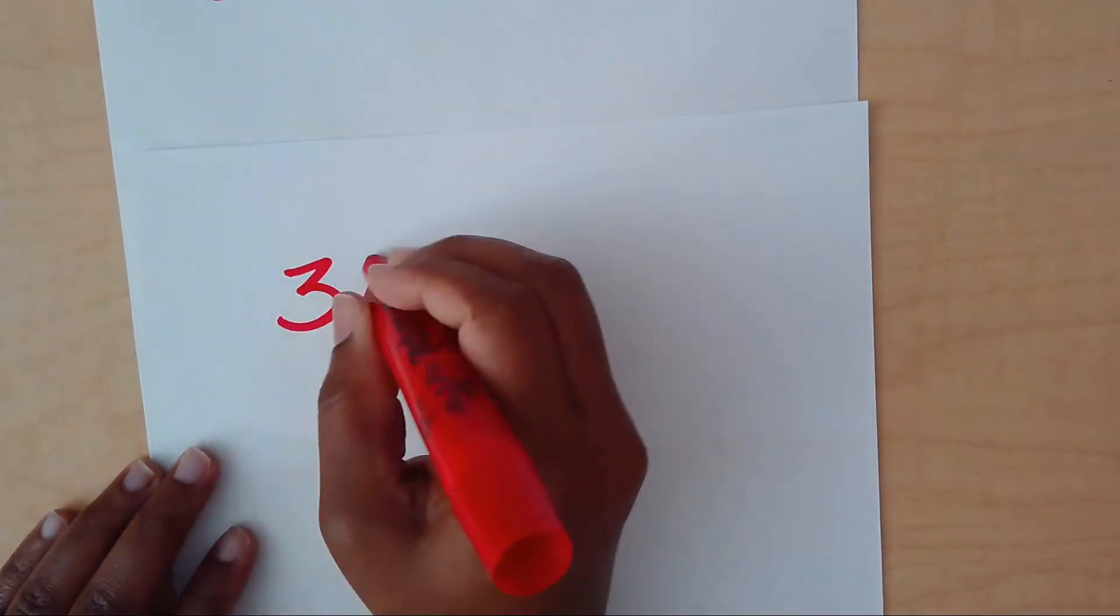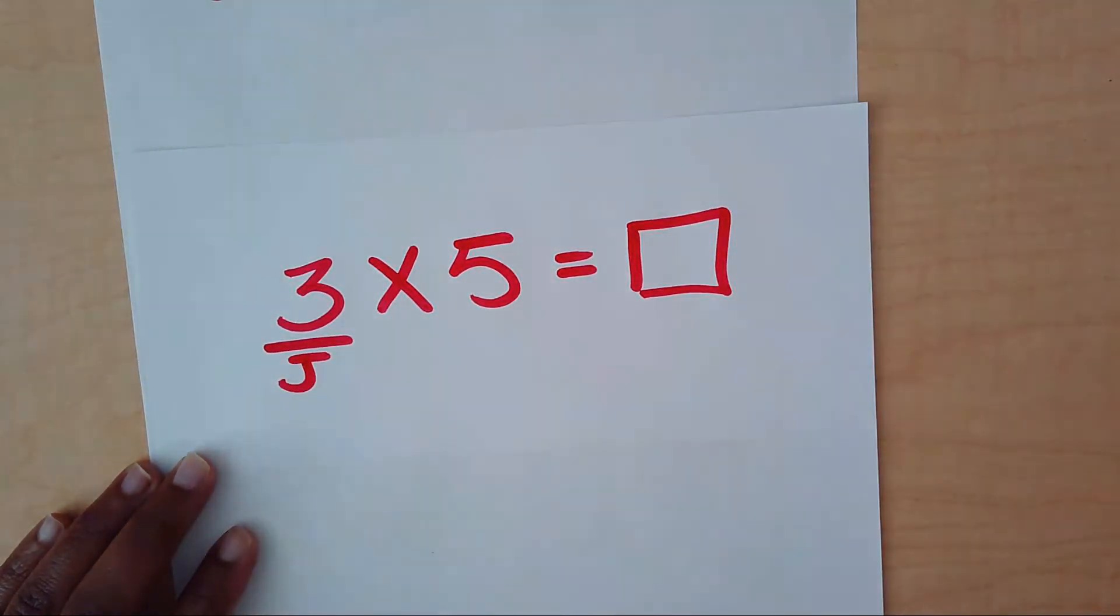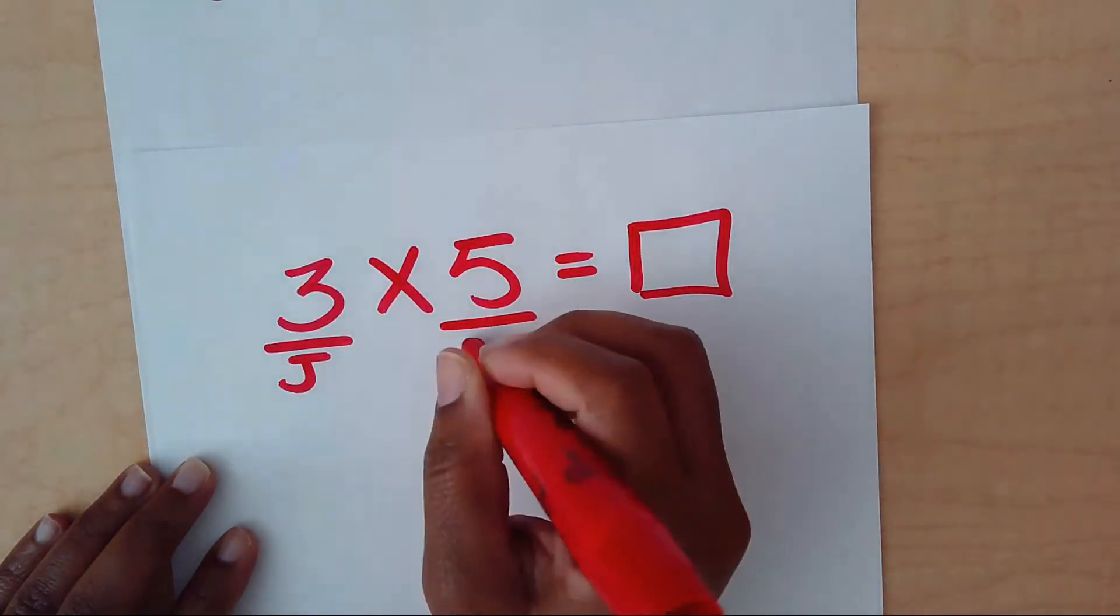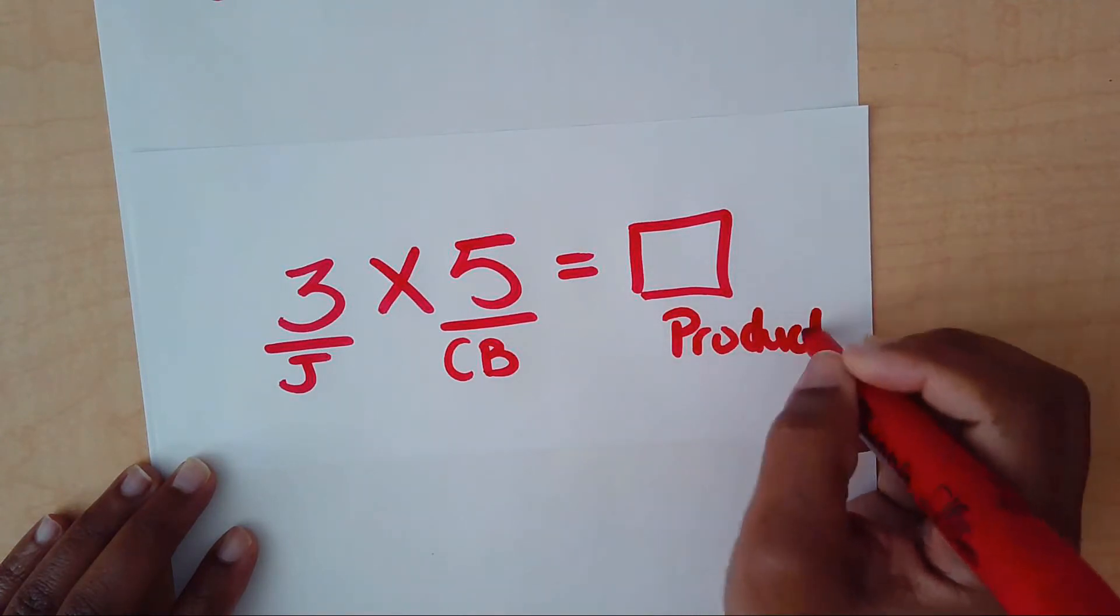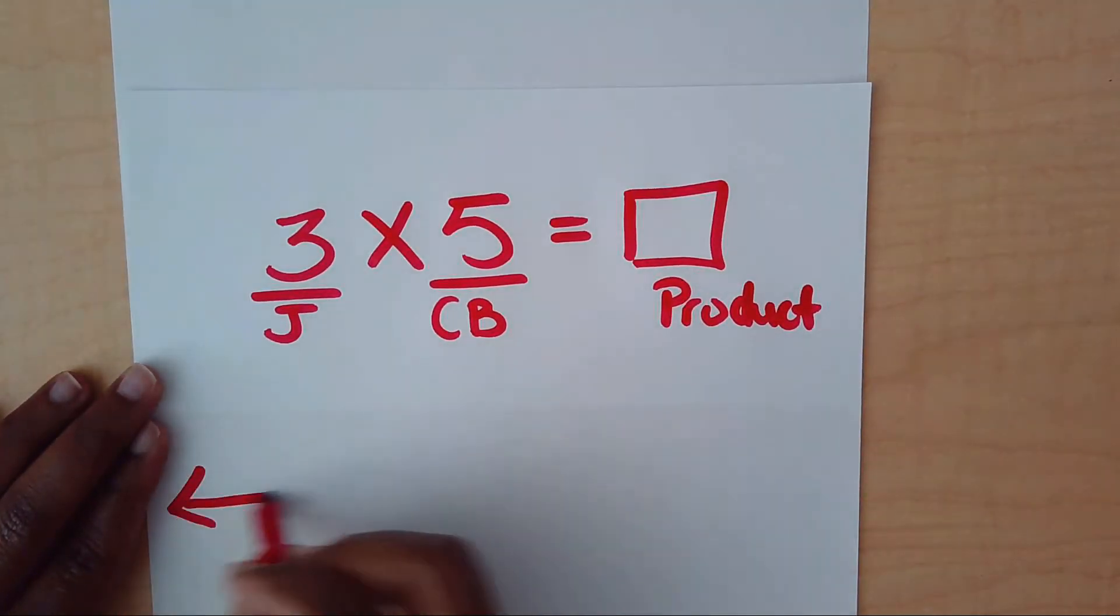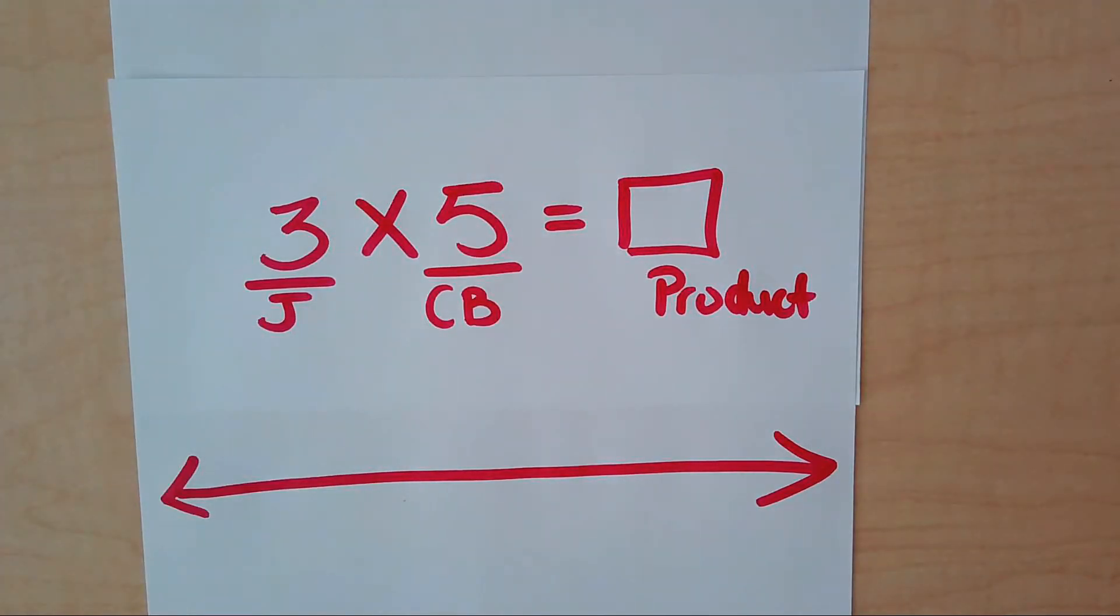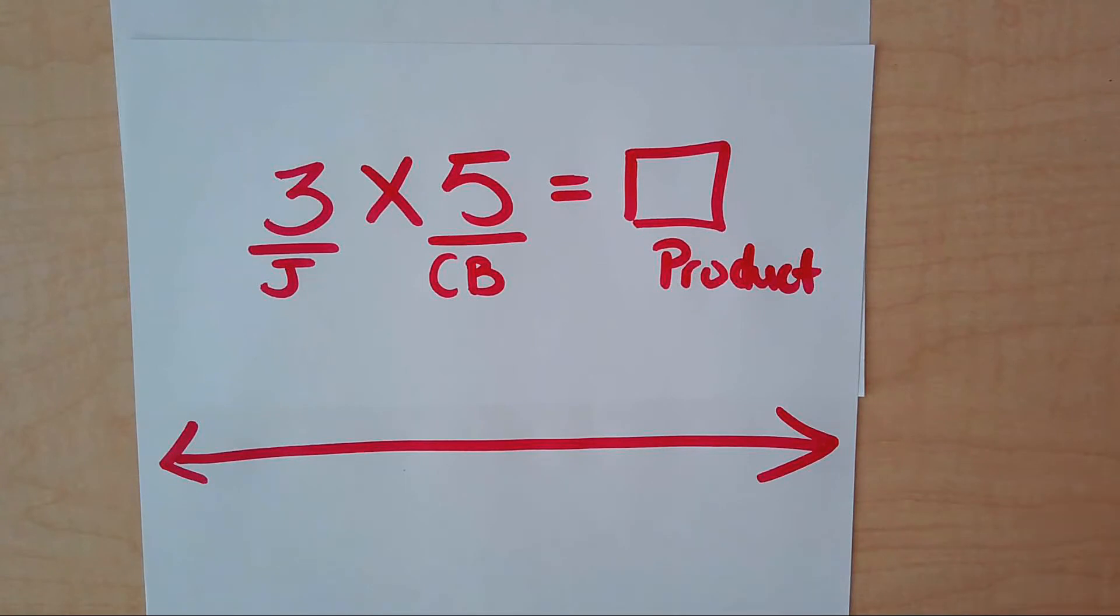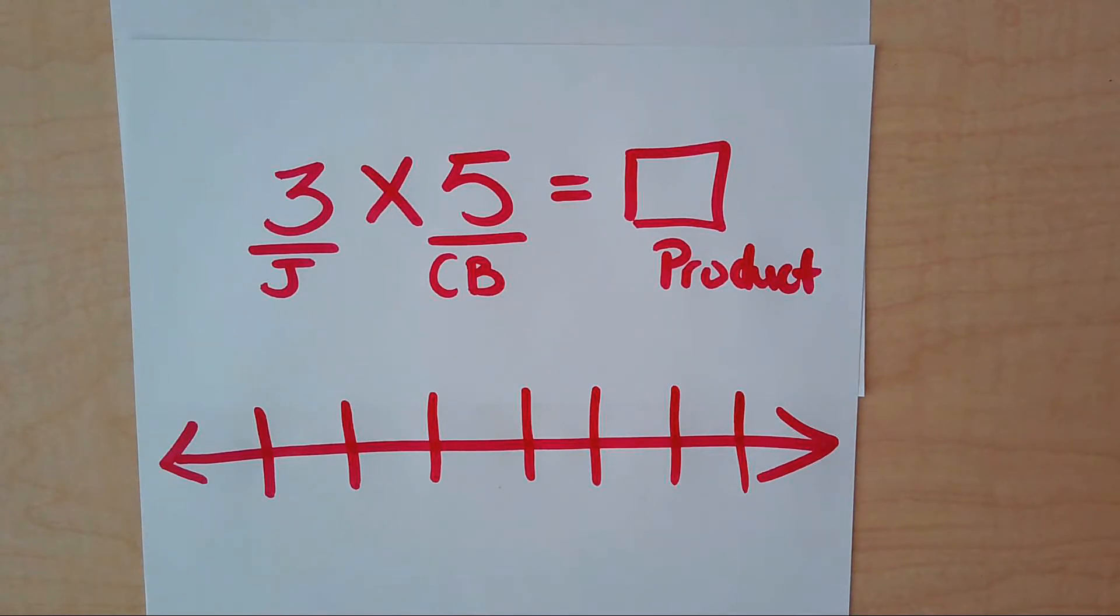So let's do another problem. Let's do three times five equals. Here's my little square. So my first number, J for jumps. Second number is CB, which goes for counting by. And this is P for product, but I will write the word product. Product is the answer that we get every time we multiply. So now we can draw our beautiful number line. If you remember what I said earlier, I know I only need to jump three times, so I don't need a very long number line.